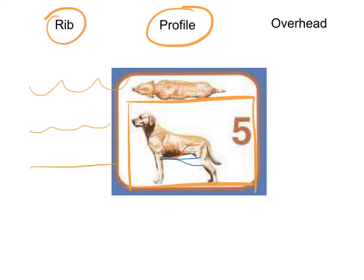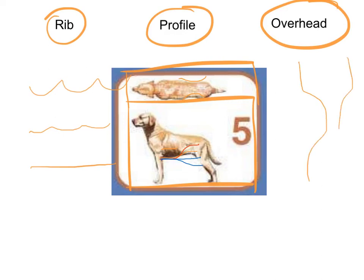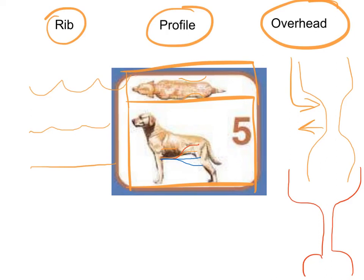The final check is the overhead check. To do this one, we'll need to be looking at the dog from this angle. What we'll want to be able to see is a waist behind the ribs — the dog should have an hourglass figure. The abdomen goes in behind the ribs and then back out again. Similarly to the profile check, in an underweight dog this will be much more pronounced. An overweight dog will just be broad, or may even bulge out slightly.